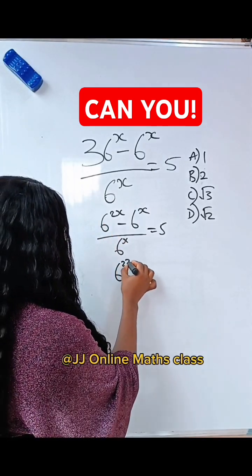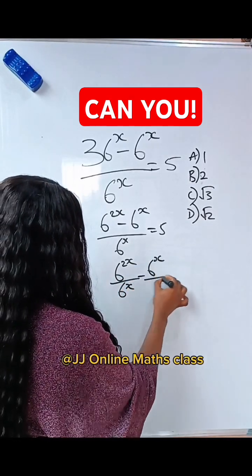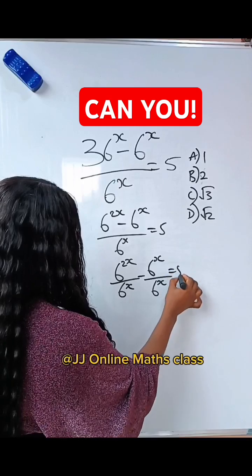this is written as 6 to the power of 2x divided by 6 to the power of x, minus 6 to the power of x divided by 6 to the power of x is equal to 5.